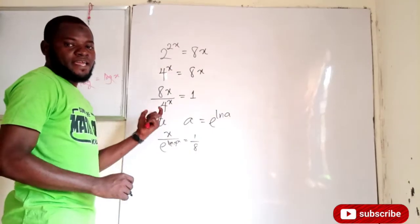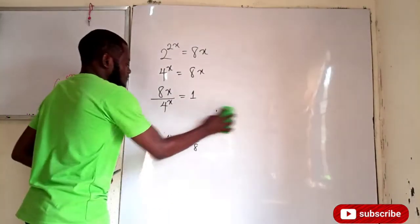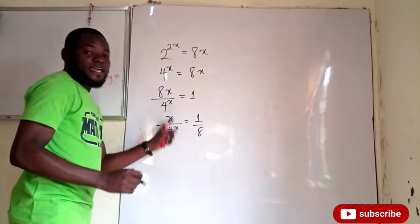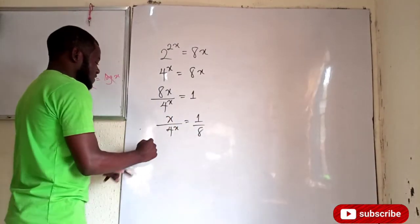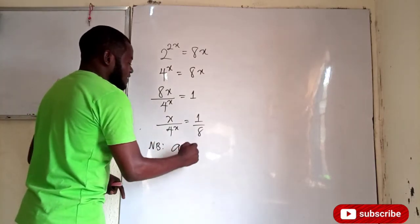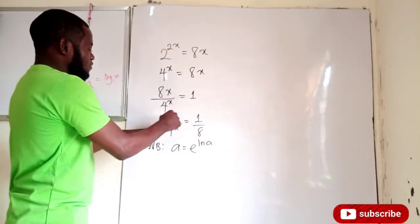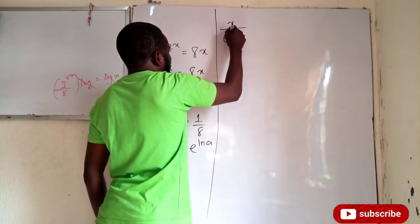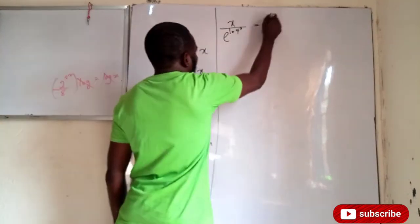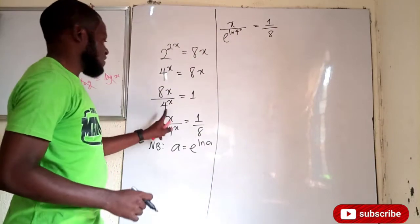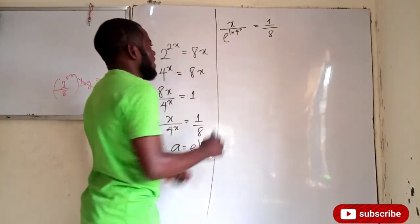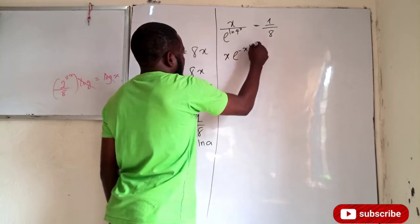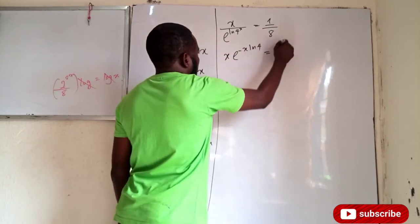Remember, I divided both sides by 8 to get 4 to the power of x equals 1 over 8. I can rewrite 4 to the power of x as e to the power of ln(4 to the power of x), which equals 1 over 8. This in turn becomes x times e to the power of negative x ln 4, equal to 1 over 8.